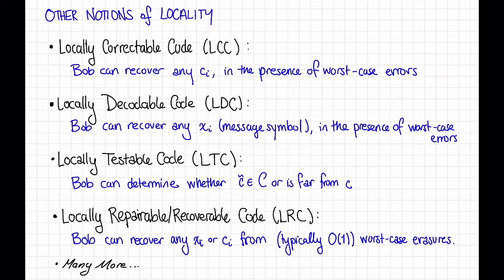Locality, broadly, refers to Bob's ability to get a small piece of information quote-unquote locally, that is, by querying only a few places of the code word. There are lots of different types of codes which exhibit locality in various different ways. What we just saw was the definition of a locally correctable code. Here, Bob can recover any symbol ci in the presence of worst-case errors, at least with high probability.